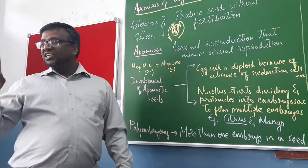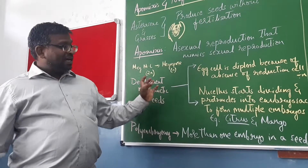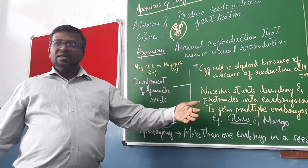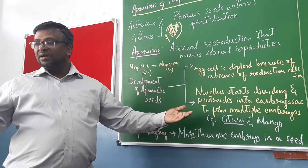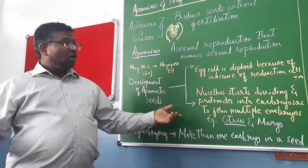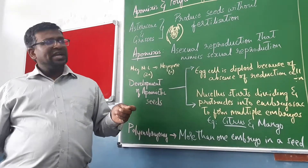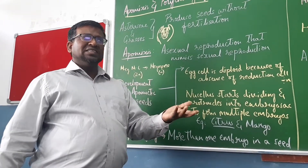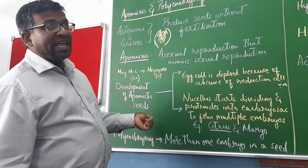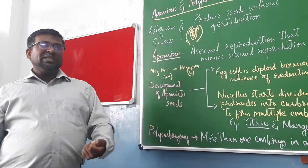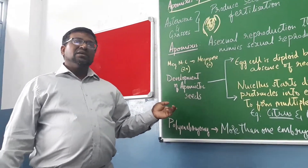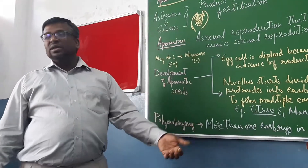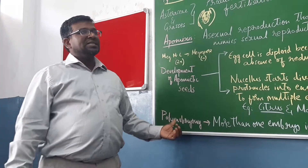Normally only one embryo is formed by fertilization. But in certain plants like citrus — including orange, lemon, grapefruit (chacota), sweet lime, and lime — and mango, polyembryony is exhibited. These additional embryos are formed without fertilization, via apomixis. Apomixis is an asexual method of reproduction that mimics sexual reproduction. Polyembryony is the presence of more than one embryo in a seed or ovule.